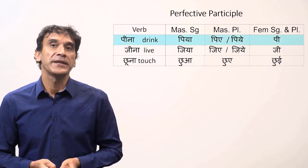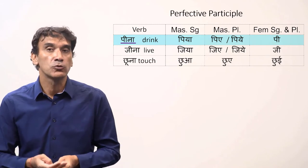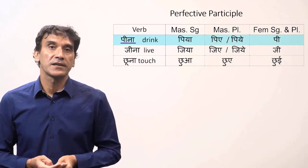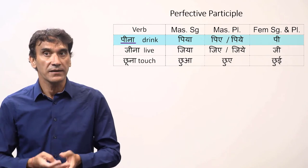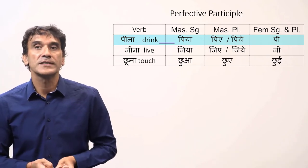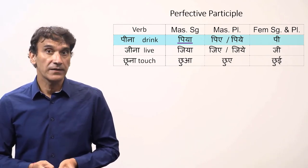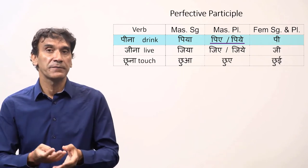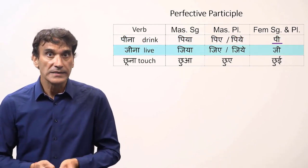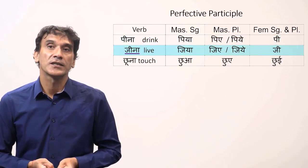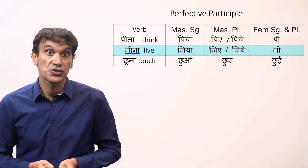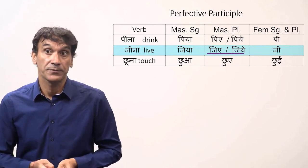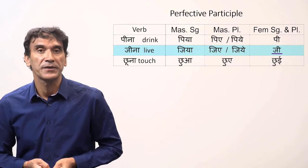Below is the table. For pina, to drink, the root is 'pee'. The ee gets shortened for the masculine forms. Masculine singular is pia, masculine plural is piye or piye, and the feminine forms are pi. Same with jina, to live, to stay alive. For jina: jiya for masculine singular, jiye or jiye for masculine plural, and jiyi for feminine.